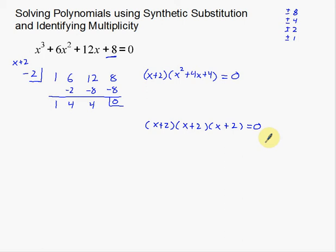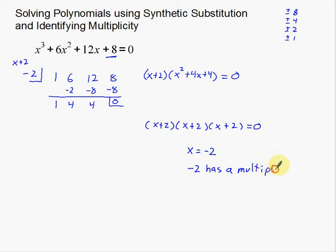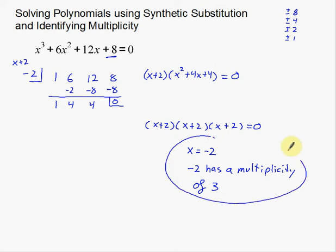Kind of an interesting coincidence, but now notice there are two things we're doing here: solving polynomials using synthetic substitution, and identifying multiplicity. We have one solution: x equals negative 2, and negative 2 shows up three times, so negative 2 has a multiplicity of 3. The multiplicity actually tells you a lot about what the graph is going to look like — hopefully your teacher will show you that using graphs.